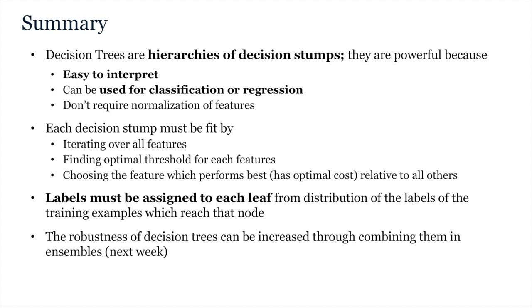In summary, decision trees are hierarchies of decision stumps. They're powerful because they're easy to interpret, can be used for classification or regression, and they don't require tiresome pre-processing tricks like normalization of all features to prevent any one from dominating. When fitting each decision stump, you must go through the process of iterating over all features, finding the optimal threshold for each feature, and ultimately choosing the feature which performs best, has the optimal cost relative to all others given the training examples which reach that node. Don't forget that in order for these to result in a prediction algorithm, the leaf nodes must be assigned a label. This is determined from the distribution of labels of the training examples which reach that node. Finally, the simplicity of decision trees means that they are essentially still weak learners. Robustness to generalization can be increased through combining them in ensembles, which will be covered next week.